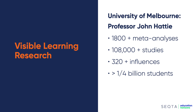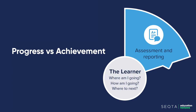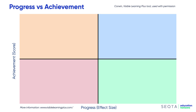Corwin have created the whole concept of progress versus achievement, which can be shown really easily in Sector Analyze. Looking at this progress versus achievement grid, the vertical column shows that everything to the right of that vertical means a student has made more than a 0.4 average increase in their learning across that year. The horizontal line shows the average for that year level, so anything above the horizontal line is above average and anything below is below average.